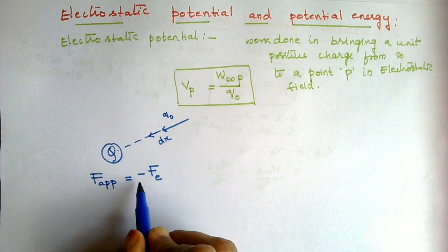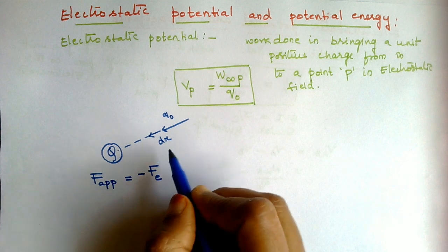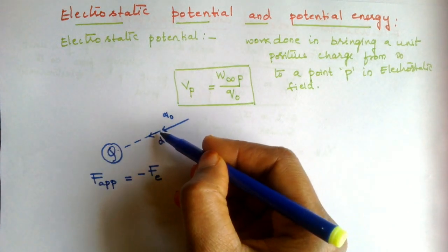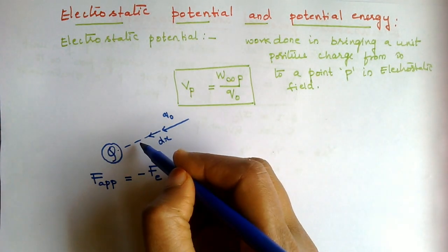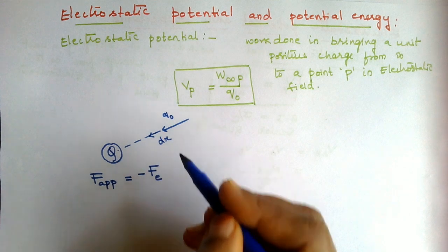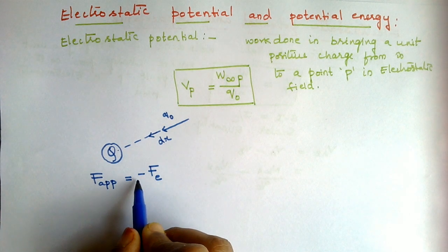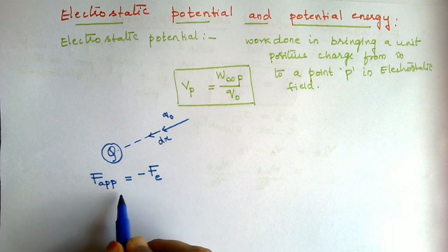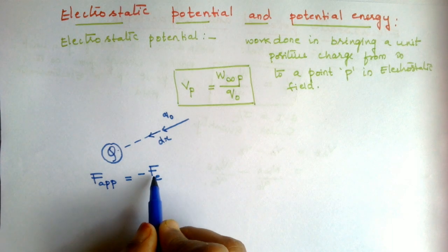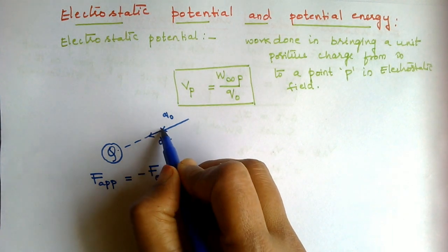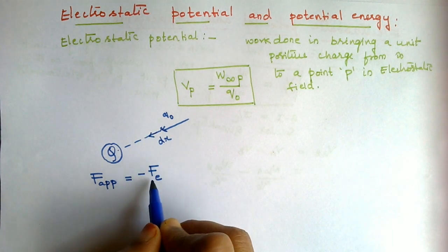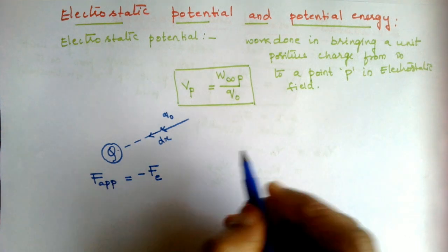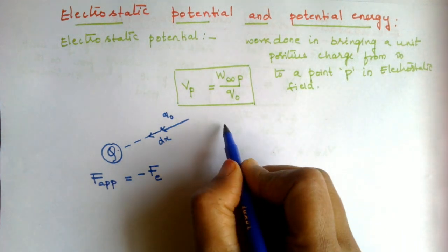The applied force is in the opposite direction to the repulsive force, so we write the applied force as minus of the electrostatic force. We already know the electrostatic force at this point is (1/4πε₀) × Q/R². Now we will calculate the amount of work done.